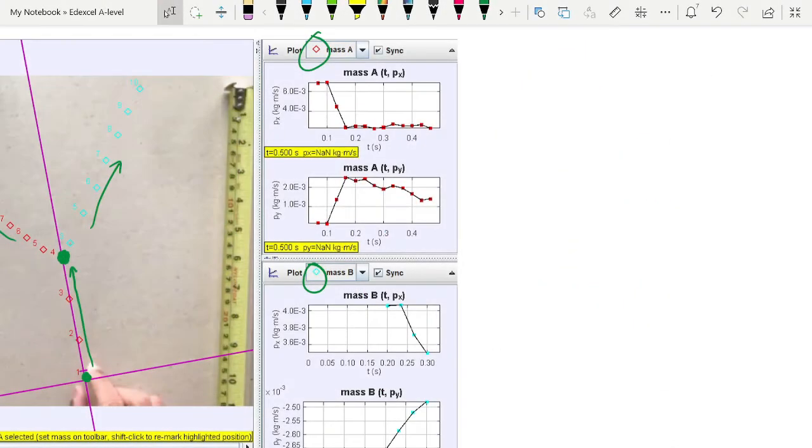You also need to measure the mass of the ball and input that into the software. When you do that, Tracker will give you values for momentum along the X axis, momentum along the Y axis for your red ball, and momentum along the X and Y axes for your blue ball. You can see there was no momentum along either X or Y for the blue ball initially.